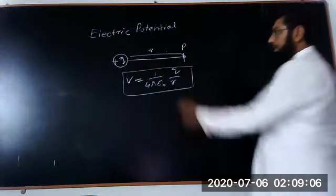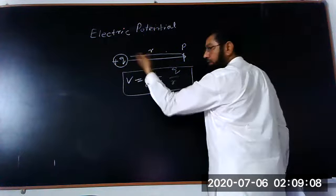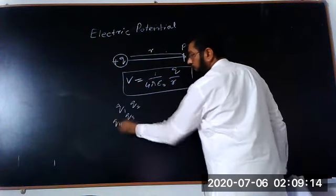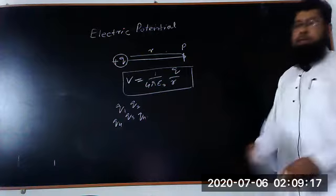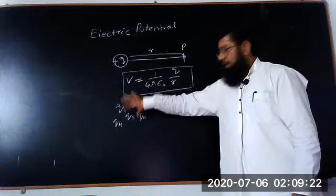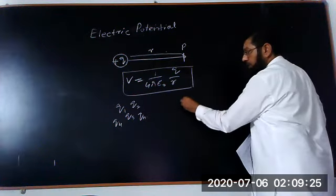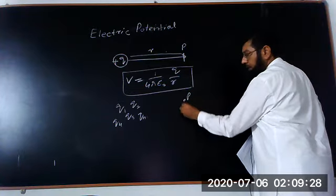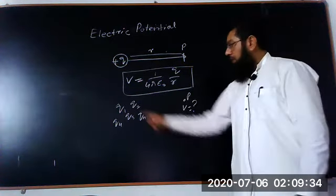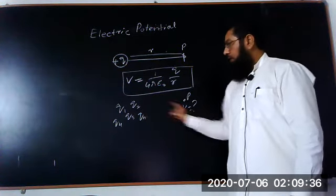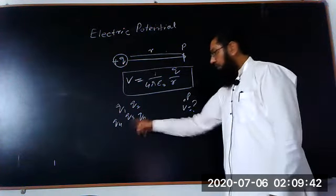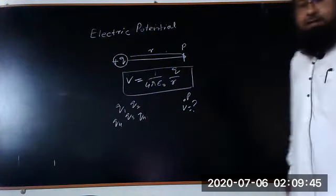Now again we have discussed, instead of this single charge, if we have multiple charges like q1, q2, q3, q4 up to qn — so many charges which are distributed in a space — if we want to find the potential at any point P, what is the electric potential due to the sum of all charges? We can calculate the potential due to charge 1, charge 2, charge 3, charge 4, and up to charge N.